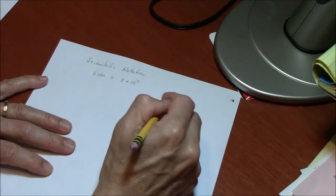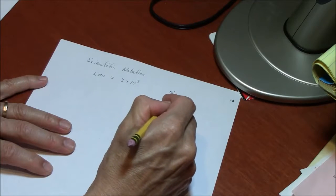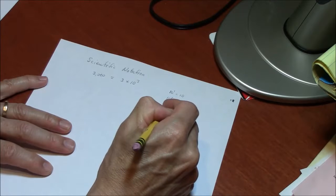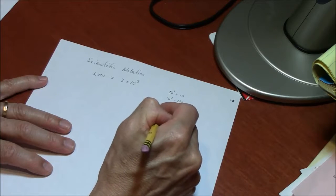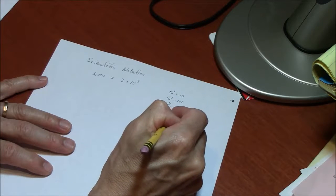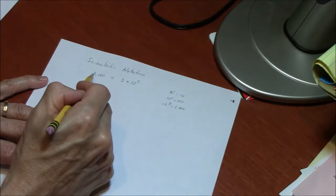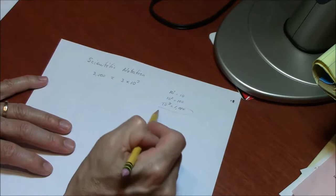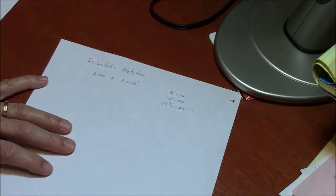In order to do this well, you have to understand 10 to the first is 10, 10 to the second is 100, 10 to the third is 1000. These are powers of 10. If I have 3000, I have 3 of these. I have 3 times 10 to the third power.